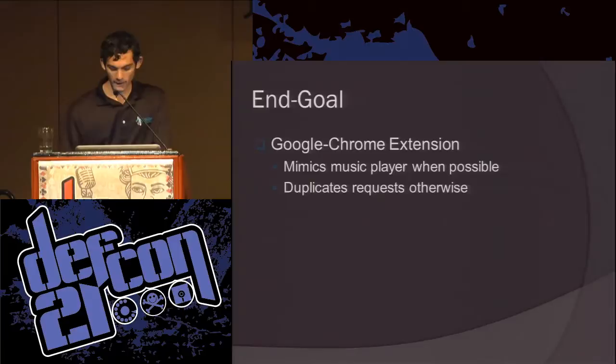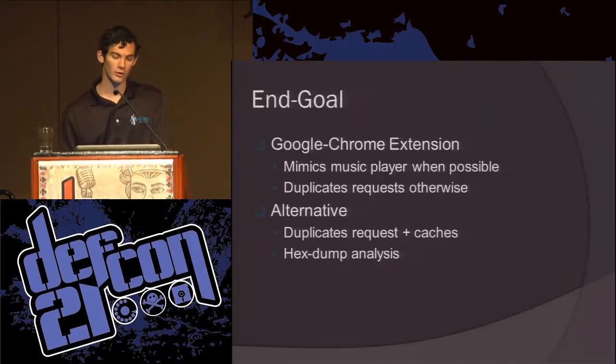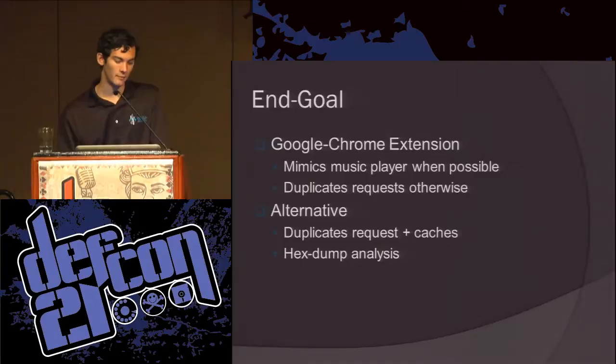But I'm not going to be releasing that. The alternative I'm releasing is a forensics tool, not an exploitation tool. What it does is duplicate requests that it sees flying by and cache them in your RAM. This is helpful for hex dump analysis afterwards — if you're into malware analysis without wanting to put it on your hard drive, you can do it entirely from your browser. It's also helpful if you want to see exactly what's being loaded into your browser.